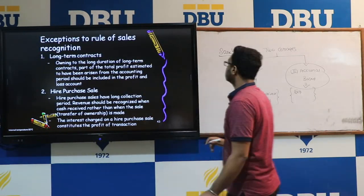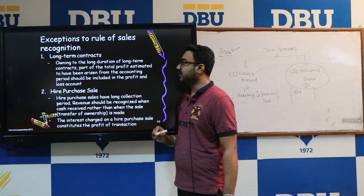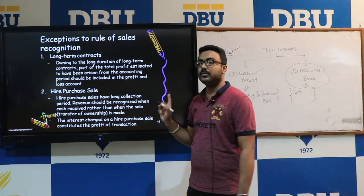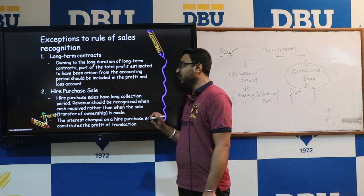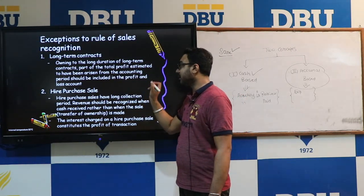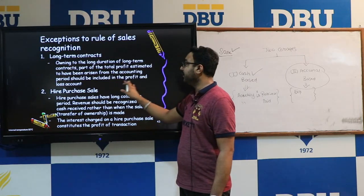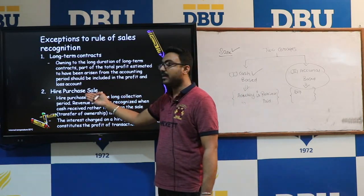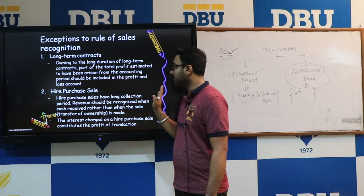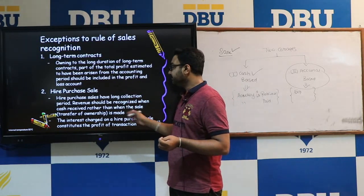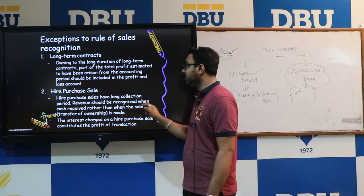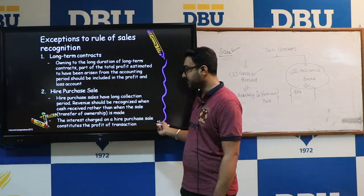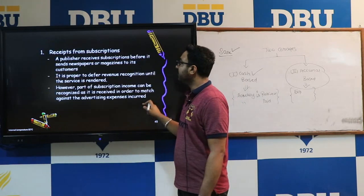There are some exceptions to the rule of sales recognition. The first is long-term contracts: a portion of the total profit estimated to arise during an accounting period should be included in the profit and loss account. Second is hire purchase sales, which have a long collection period, so revenue should be recognized when cash is received rather than when the sale is made. The interest charge on a hire purchase sale constitutes the profit of the transaction.